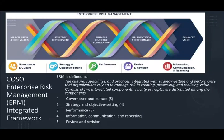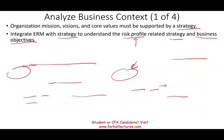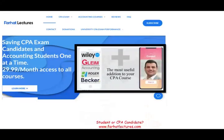In this session we went over strategy and objective setting, which is part of ERM. We are done with component one and component two. In the next session we'll look at component three, which is performance, where we'll manage risk in creating, preserving, and realizing value. Whether you are an accounting student or a CPA candidate, I strongly suggest you visit my website farhatlectures.com. I can provide additional explanation, resources, and multiple-choice practice to help you pass the exam. Good luck, study hard, and stay safe.